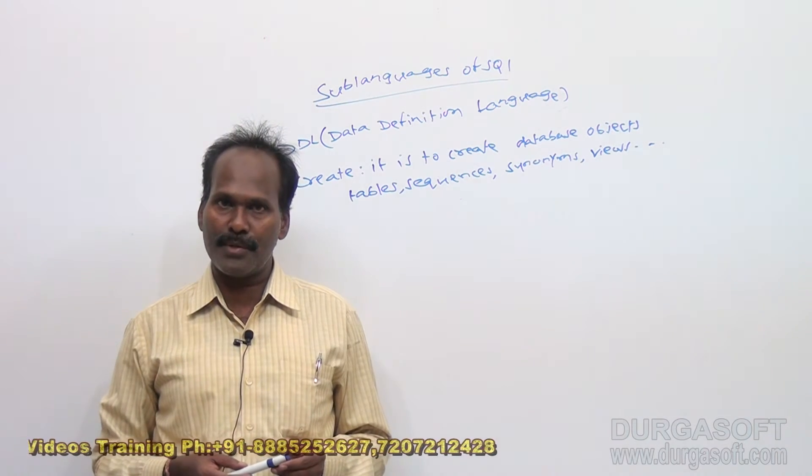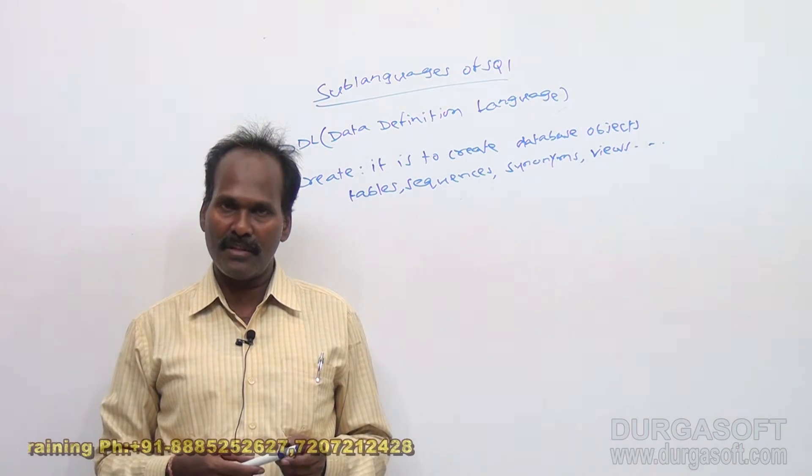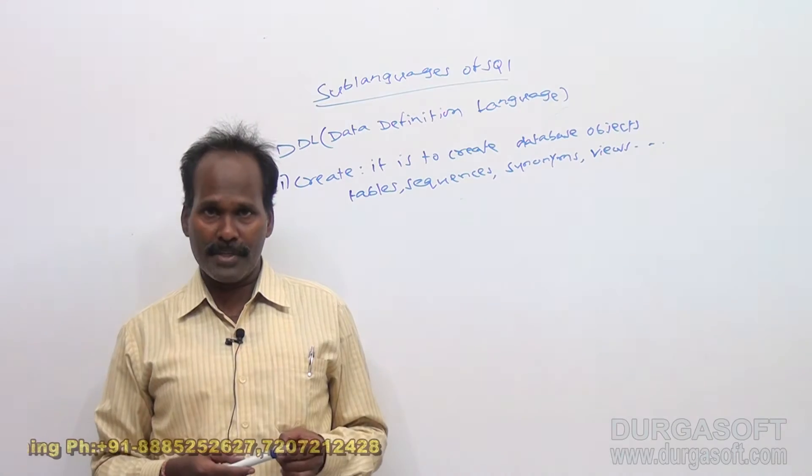What are the data types? Like character, varchar, varchar2, date, timestamp. These types can be given as data columns in the create table option, create table command.